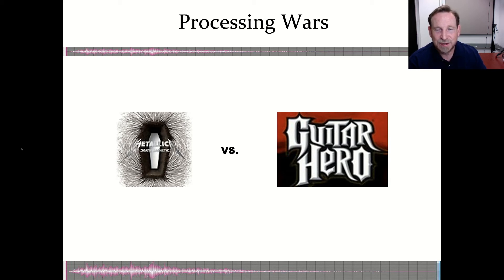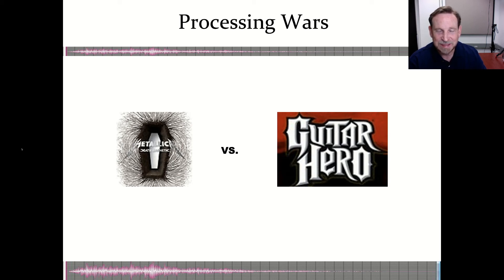Guitar Hero received a master of one of the songs from Death Magnetic, but they received it before it was all the way processed. So Guitar Hero processed it for its game, and Metallica's mastering team processed it for its commercial release.